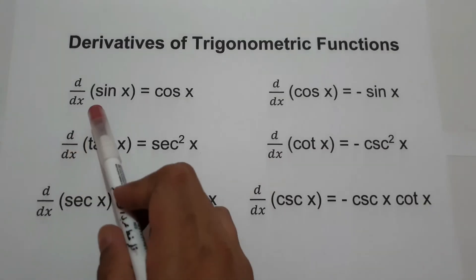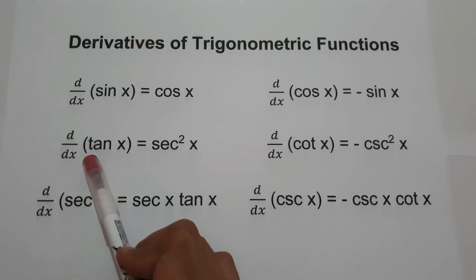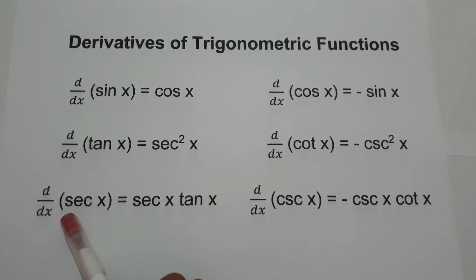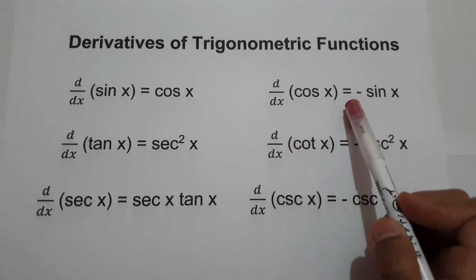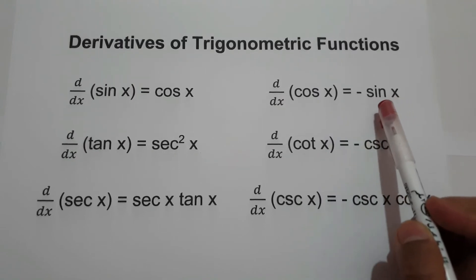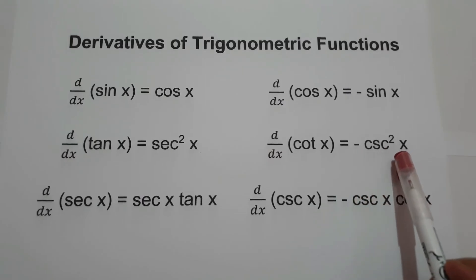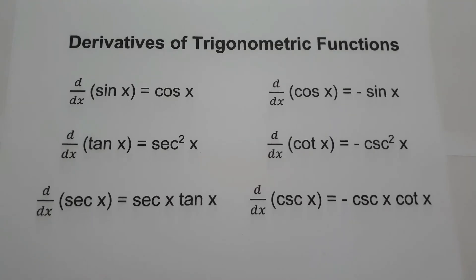The first one is the derivative of sine x is cosine x. The second one, the derivative of tangent x is secant squared x. Then we have the derivative of secant x is secant x multiplied by tangent x. Next, we have the derivative of cosine x is negative sine x. And then we have the derivative of cot x is equal to negative cosecant squared x. And the derivative of cosecant x is negative cosecant x times cot x. So these are the things that you need to remember in order to find the derivative of trigonometric functions.